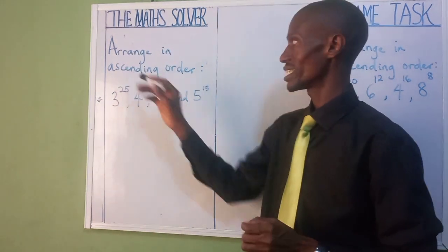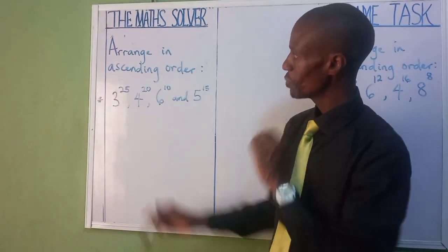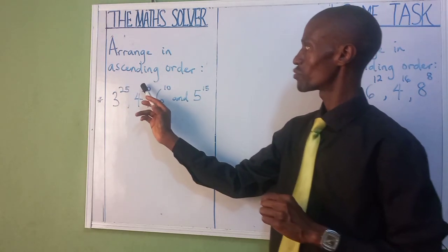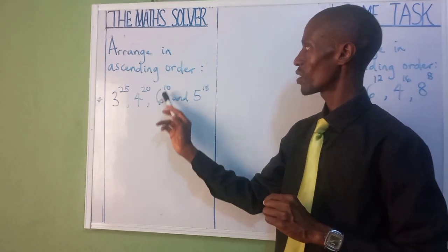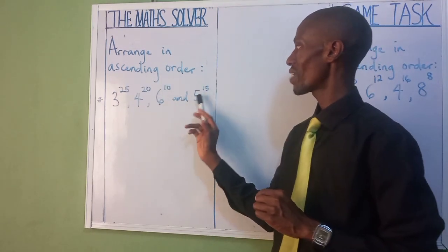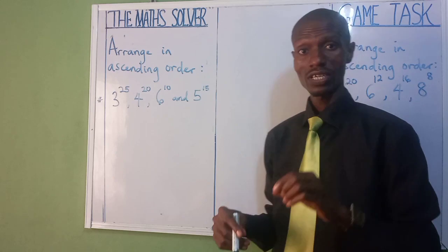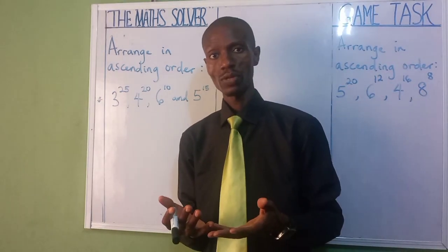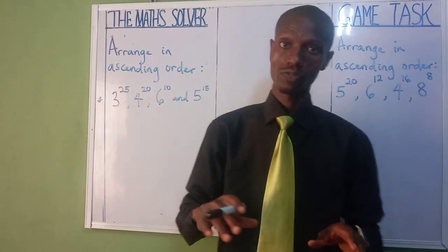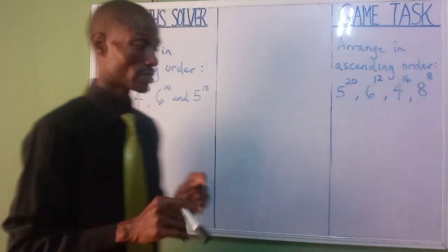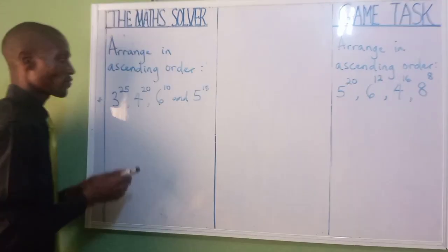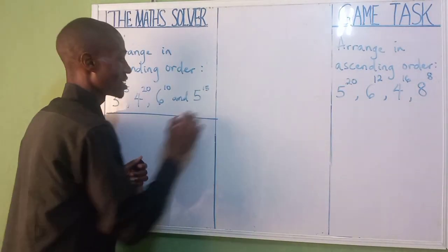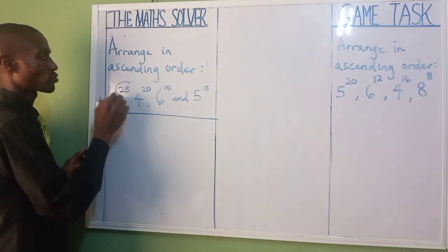That is ascending order. We now have three raised to the power of 25, four raised to the power of 20, six raised to the power of 10, and five raised to the power of 15. Which one is the smallest and which one is the biggest? Let's solve it together — it's very simple.